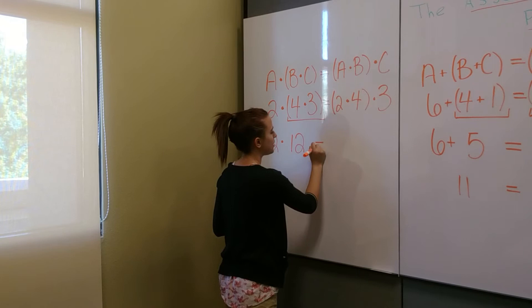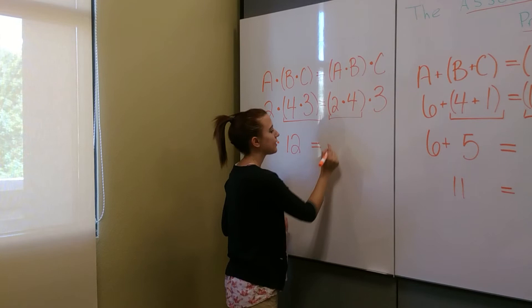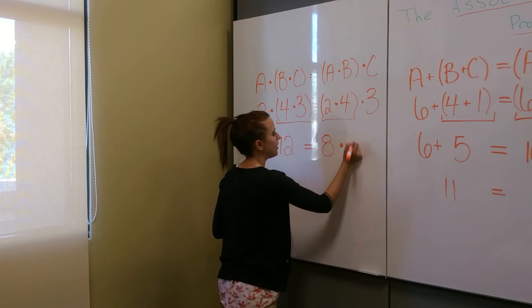And once again, we start with our parentheses over here. 2 times 4 is equal to 8. And then we have to remember the times 3 at the end there. So we write that down.